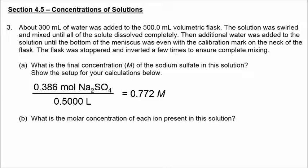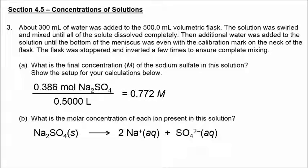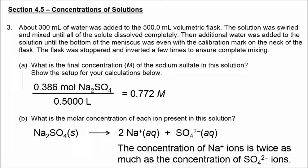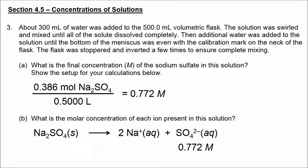Now that we know the concentration of sodium sulfate is 0.772 moles per liter, the next question asks about the molar concentration of each ion. Remember, this is Na2SO4. When you dissolve a salt in solution and it completely dissociates into ions, the concentration of sodium ions has to be twice as much as the concentration of sulfate because the formula is Na2SO4. So the concentration of sulfate would be 0.772, but twice that number, 1.54 moles per liter, would be the concentration of sodium ions.